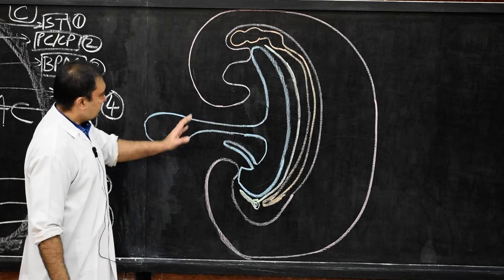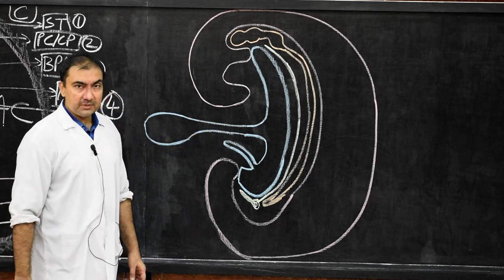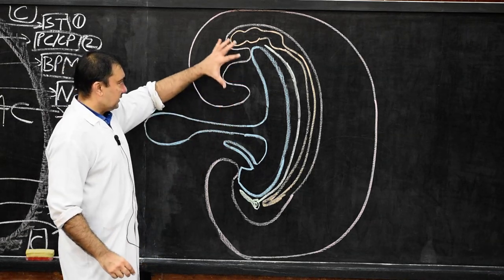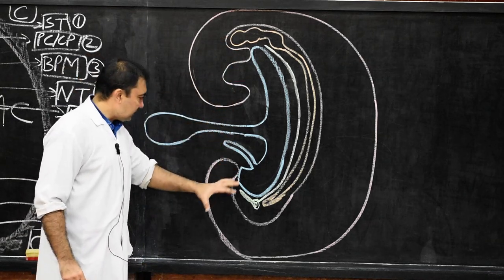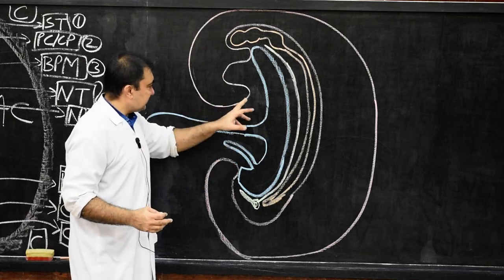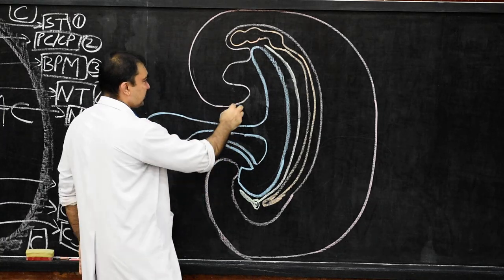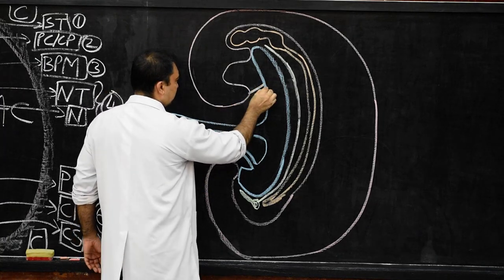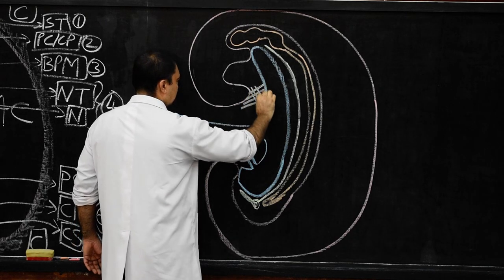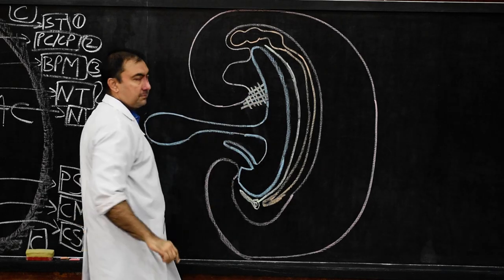This completes our diagram. Now we draw the septum transversum — after the folding, the septum transversum will be drawn in the caudal most region. This is the region where we shall draw the septum transversum.